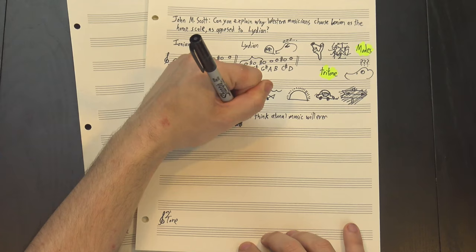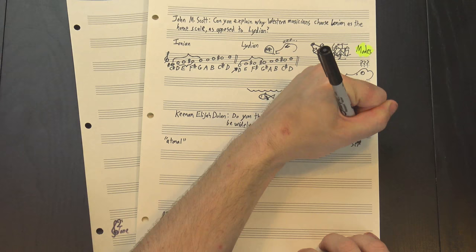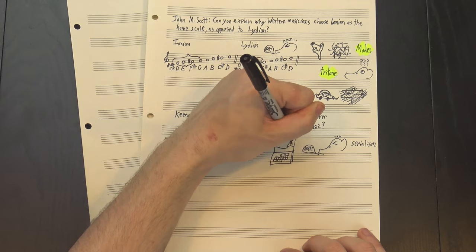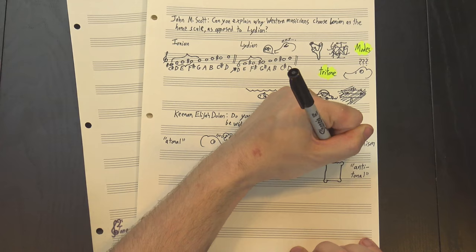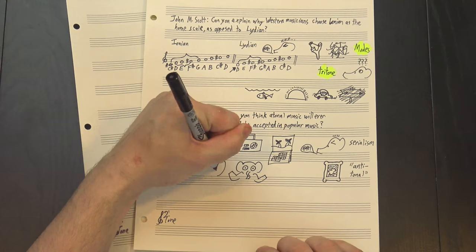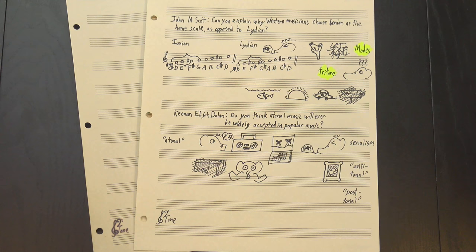Kenan Elijah Dolan asked, do you think atonal music will ever be widely accepted in popular music? Depends what you mean by atonal. We tend to associate that term with movements like serialism that are intentionally, aggressively dissonant, and while I don't like to say never because the future is a long time, I'd be pretty surprised to see that becoming a regular feature of popular music within my lifetime. However, some theorists argue that this sort of music should actually be called antitonal, and that the term atonal better describes styles like the Impressionists and certain late romantics, where the music just lacks a strong tonal center either because the key keeps changing or because it just doesn't really have one. This is also sometimes called post-tonal music, and I see no reason why it can't exist in pop.